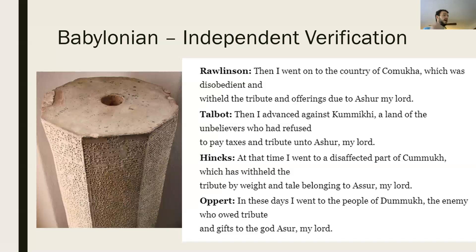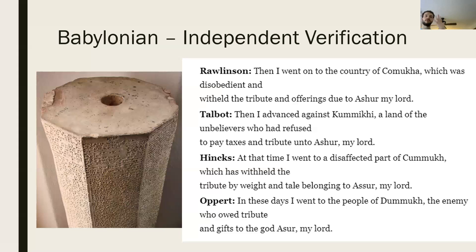Hink said: "At that time, I went to a disaffected part of Kamuk, which has withheld the tribute by weight and tail belonging to Ashur, my lord." And finally, Uppard said: "In these days, I went to the people of Dumuk, the enemy who owed tribute and gifts to the god Ashur, my lord." We can see that these example decipherments are very, very similar to each other, and the general content of the message basically comes through every time. The only striking difference is the spelling of the place names — Kamukra, Kamuki, or Dumuk.